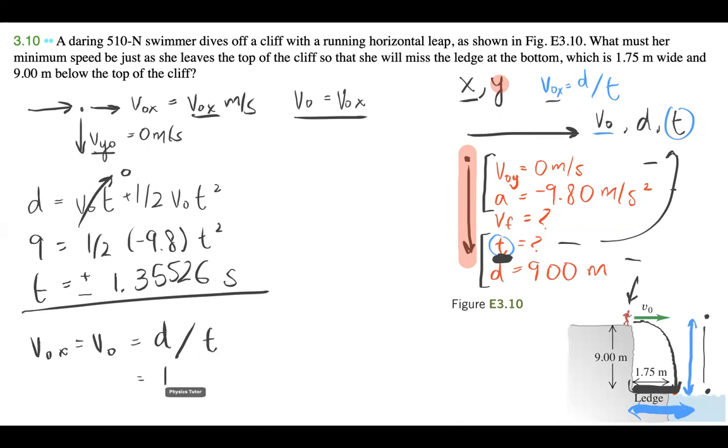We know that the distance is 1.75 meters and the time this takes is 1.355 seconds. It can't be negative seconds, so we're into the positive time. And we get v-naught is equal to 1.29 meters per second.